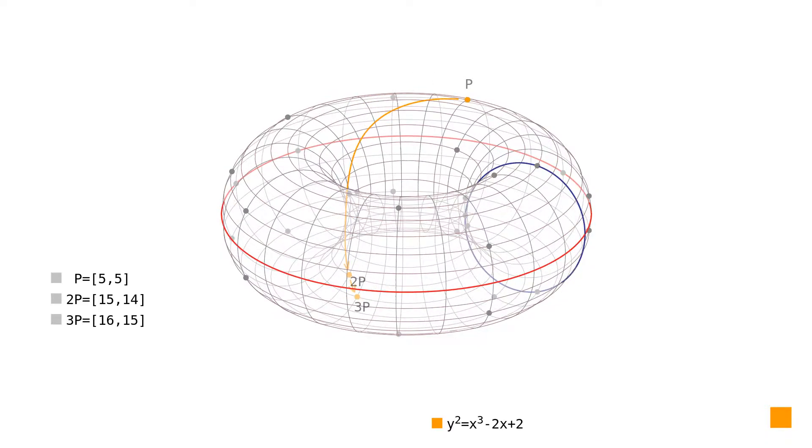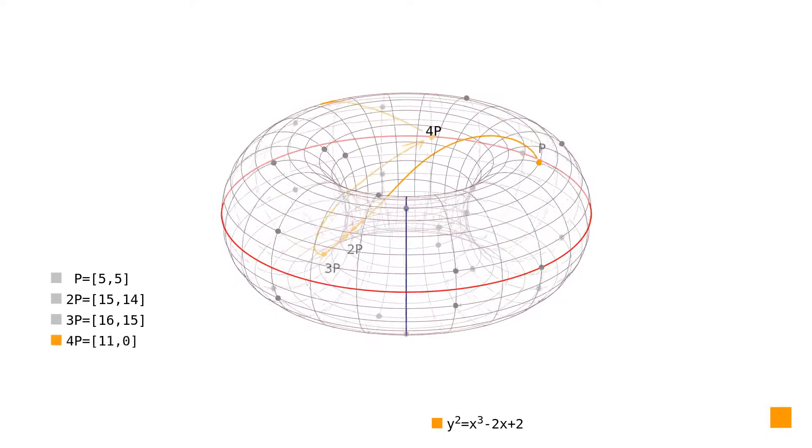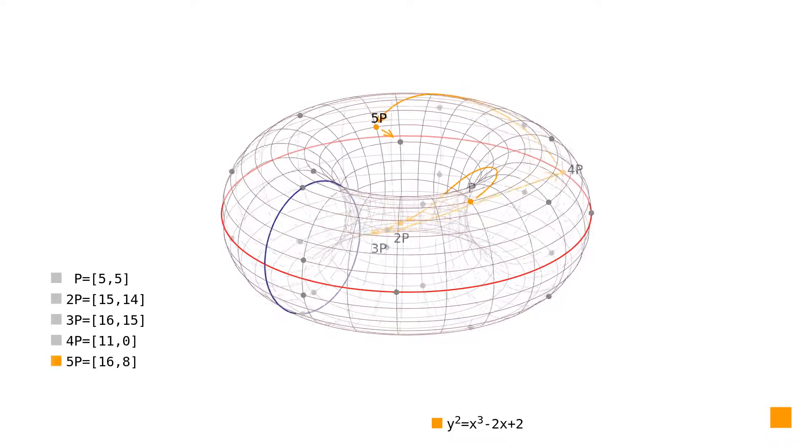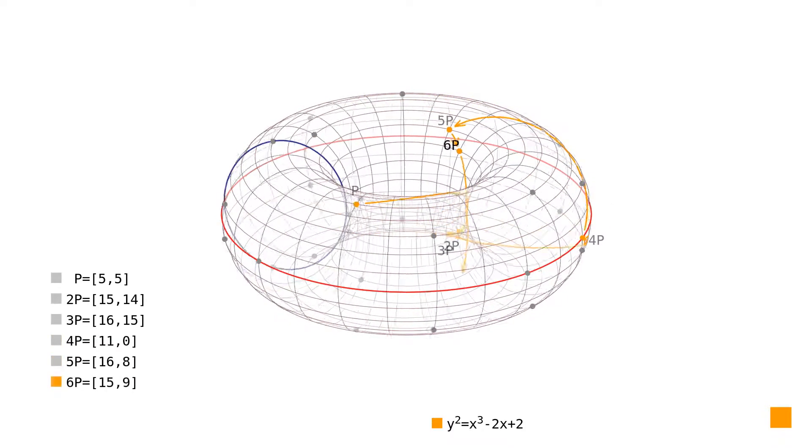Using scalar multiplication we traverse over the points 4P, then 5P, 6P, and finally 7P.